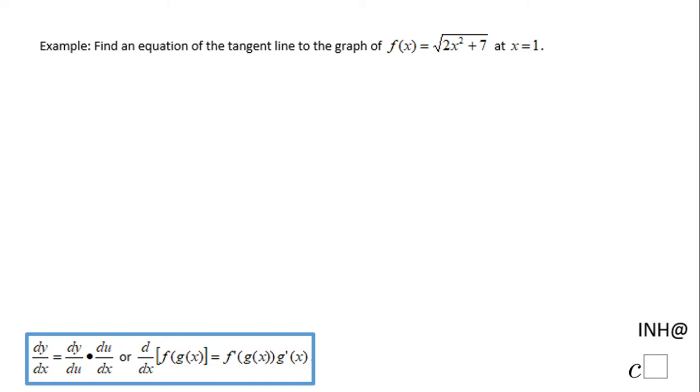Welcome or welcome back. I need help at C squared. In this example we need to find the equation of the tangent line to the graph of f(x) equals square root of 2x squared plus 7 at x equals 1. For finding the equation of the tangent line, first we need to find the slope of the tangent line.